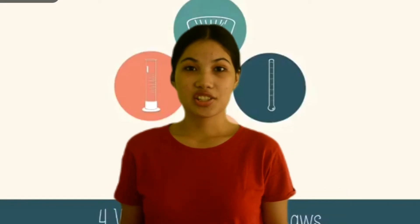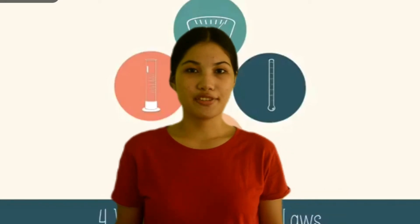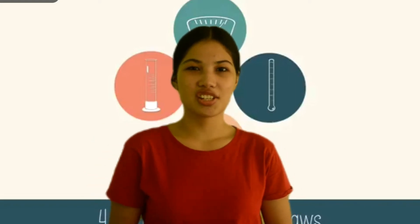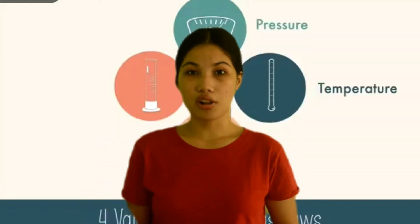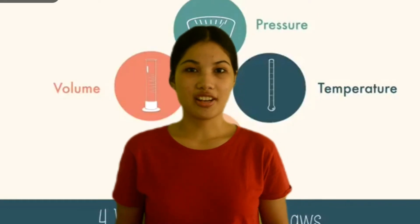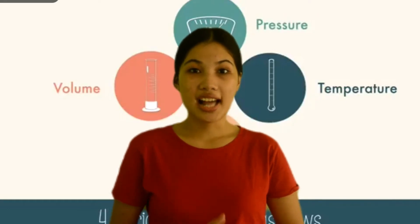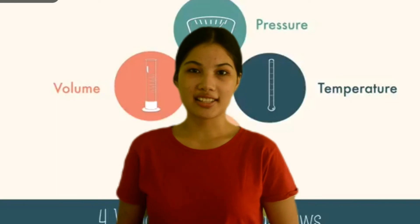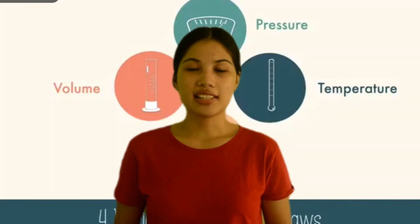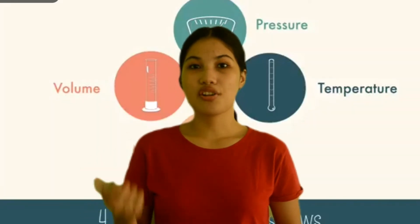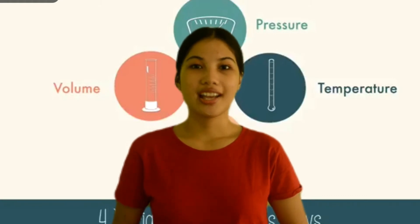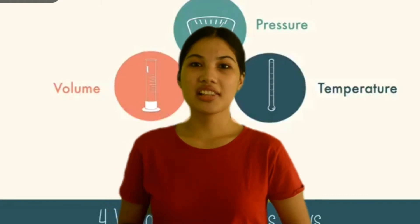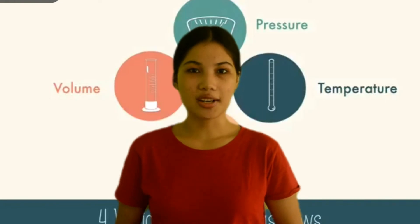All gases generally show similar behavior when the conditions are normal. But with a slight change in physical conditions like the pressure, temperature, or volume, these show a difference. Gas laws are an analysis of the behavior of gases. The variables of state like the pressure, temperature, or volume of a gas depict its true nature. Hence, gas laws are relations between these variables.